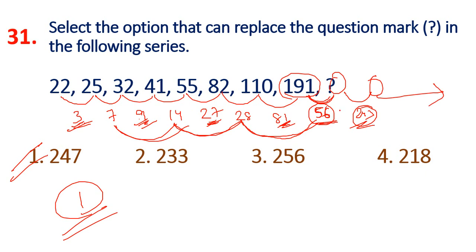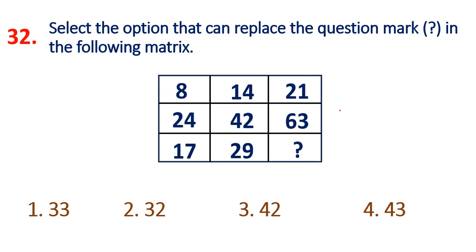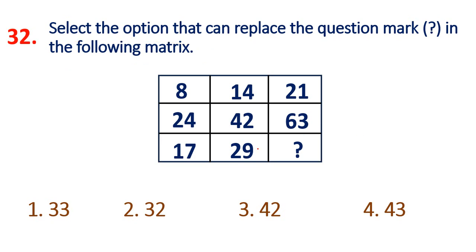Next, question 32 is a matrix question. We need to find what goes in the question mark's place. Looking at the first row: the numbers have a pattern where each value multiplied by 3 gives the next - 8 times 3 is 14 times 3 is 21 times 3.